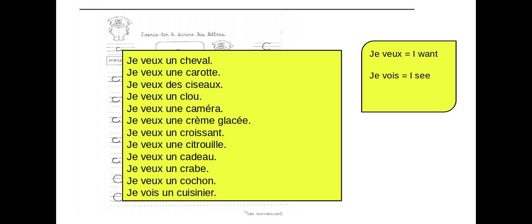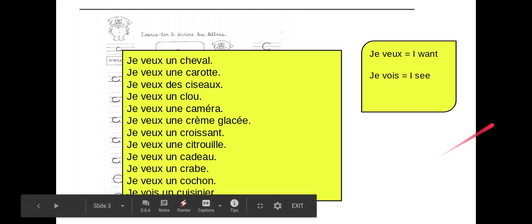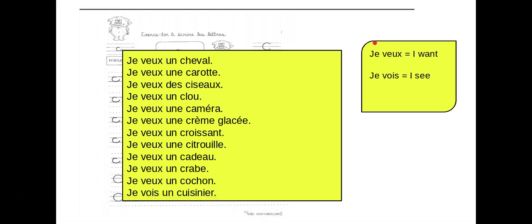Nous avons deux phrases débutantes. We have two beginning phrases. Nous avons je veux, je veux, that means I want. Je veux, I want.